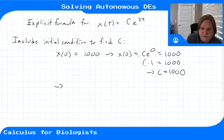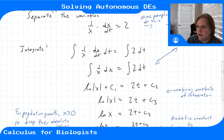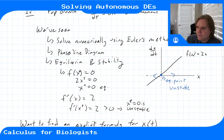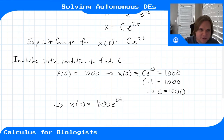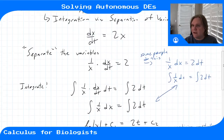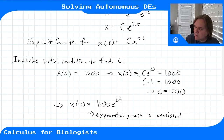So our final formula is x(t) = 1000·e^(2t). Going back to our phase line diagram, we start at 1000, away from the equilibrium. We flow away from zero, increasing exponentially. Looking at the solution 1000·e^(2t), as t increases this just gets bigger and bigger. This exponential growth is consistent with the phase line diagram.